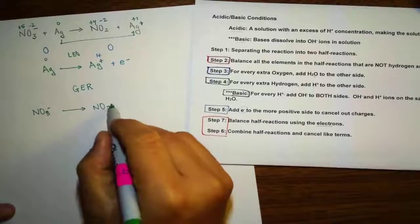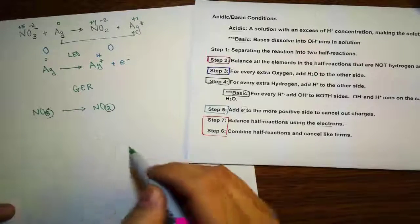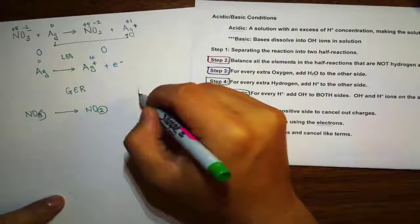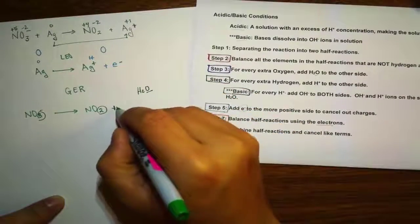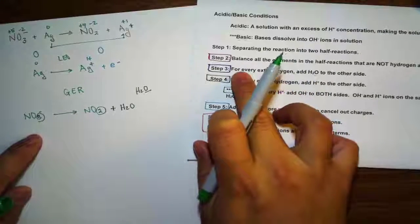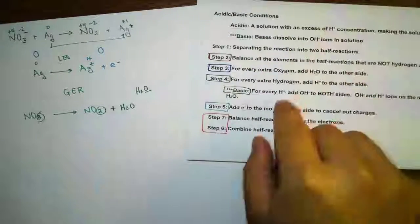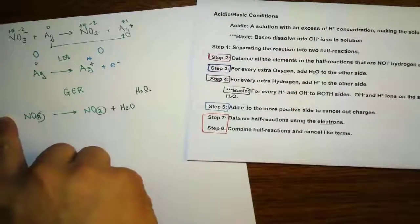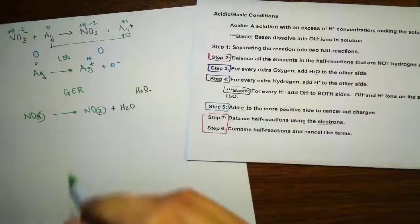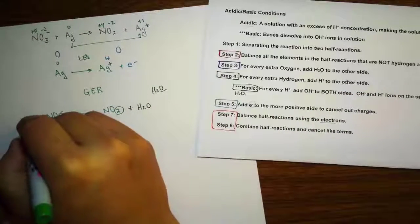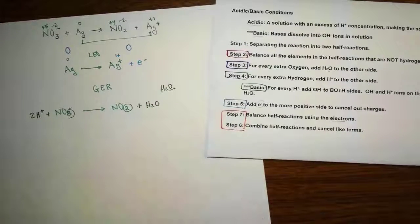Here we have 2 oxygen on one side and 3 oxygen on the other. We need to balance them by adding water to the side with fewer oxygens — one water molecule adds one oxygen, so we add 1 H₂O. Now both sides have 3 oxygen. Moving to step 4: adding water introduced 2 hydrogen on one side and 0 on the other. For every extra hydrogen, we add H⁺ to the side that has fewer. So we add 2 H⁺. Now both sides have hydrogen balanced.